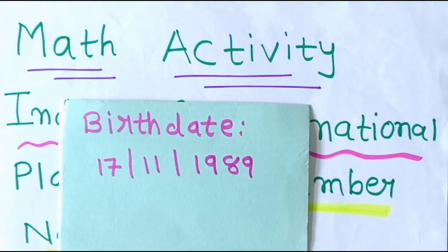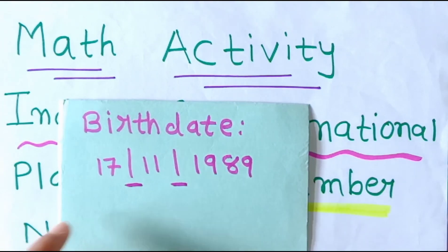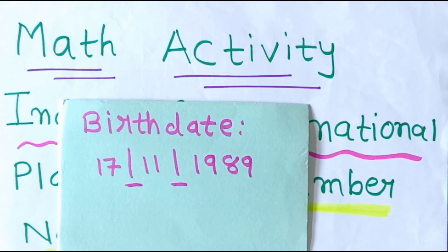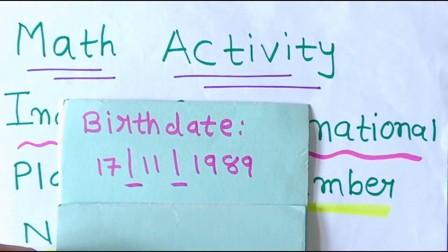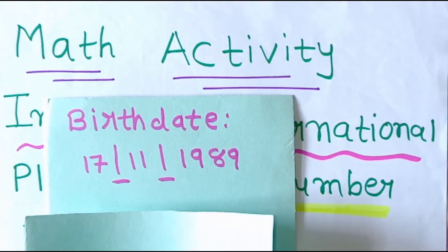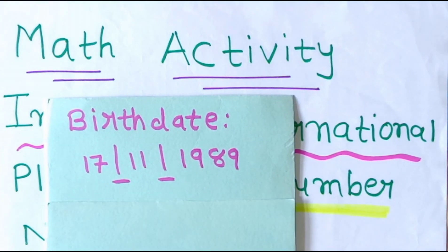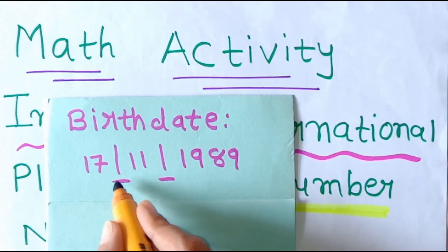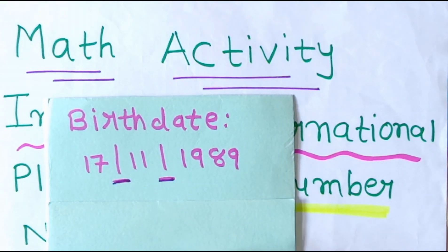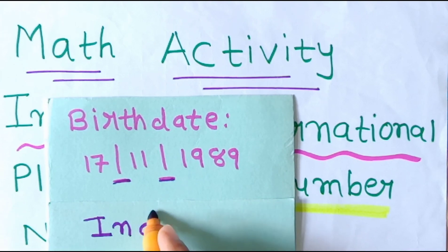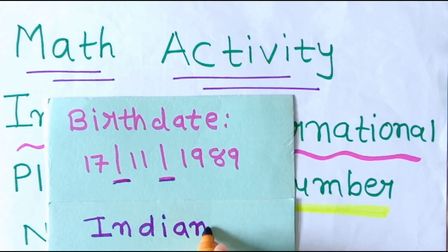Then you have to remove the slash signs from this date, and on another card you have to write this number as per the Indian place value chart. Now write your birth date without the signs — we remove the signs and write the number as per the Indian place value chart.